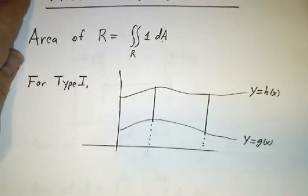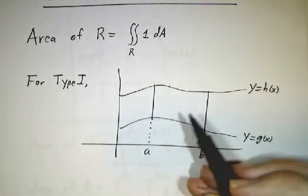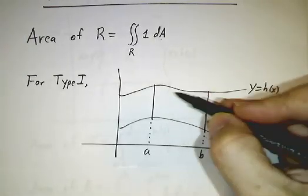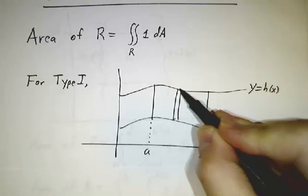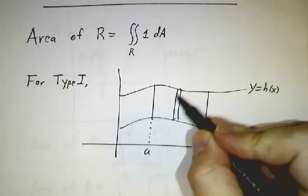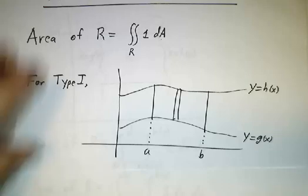Now, if you have a Type 1 region, what does that mean? It means we're integrating the function 1 from g(x) to h(x), and then that gives us the area of a column. Then we integrate that from a to b, and that gives us the total area.